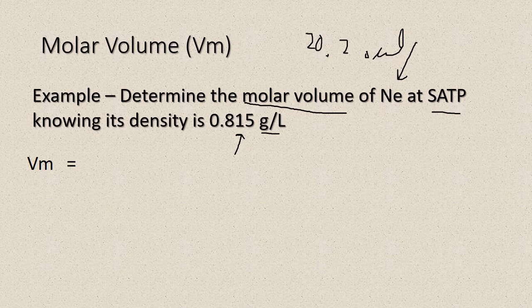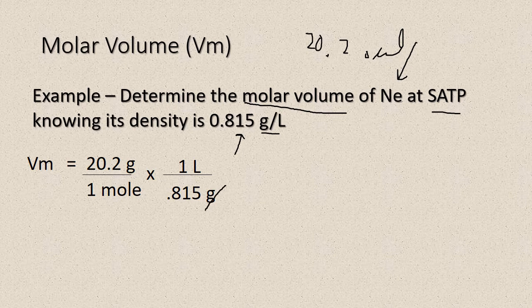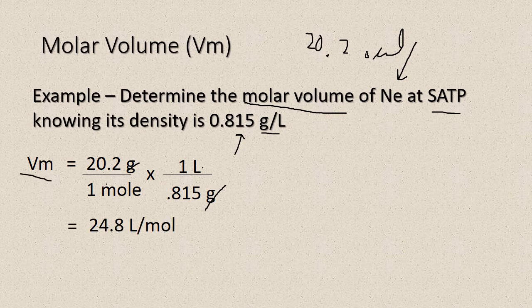So what we're going to do is we've got a couple of numbers and we're going to rearrange them so that we can get the correct units. So let's take this 20.2 grams and put that over one mole. Then we're going to take that density term and flip it over. We're doing this so we can cancel out our grams, because we'll be left with the units of liters per mole, which is the units of molar volume. So all we've got to do is take that 20.2 and divide by the 0.815, and we should get this value of 24.8.